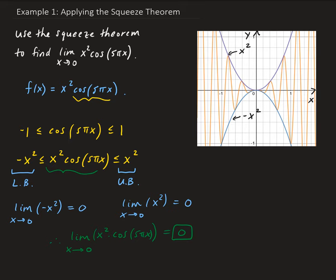So this is how we apply the squeeze theorem. We work with a set of inequalities. We know that cosine, for whichever argument it is, is bounded between negative 1 and 1, and then we multiply through by x squared — that gives us our lower bound and upper bound. We take the limit of the lower bound and the upper bound as x approaches 0, and they both give us the same limit. Therefore, the limit of our function as x approaches 0 is 0.